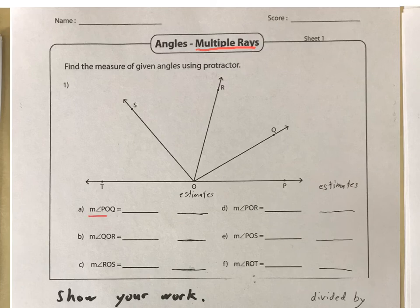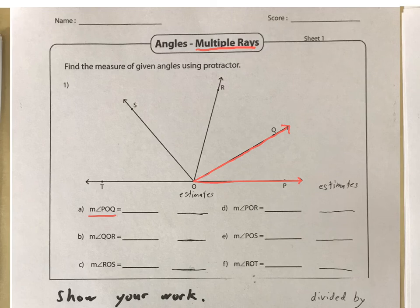First we're going to measure angle POQ. POQ would be PO — there's Q — that's POQ right there. Do an estimate first. That to me looks a little bit less than 45 degrees, maybe around 35 degrees. We'll see how close I am.